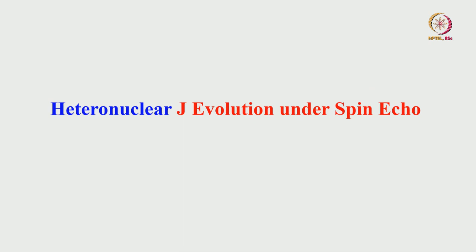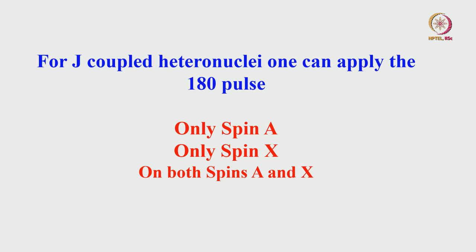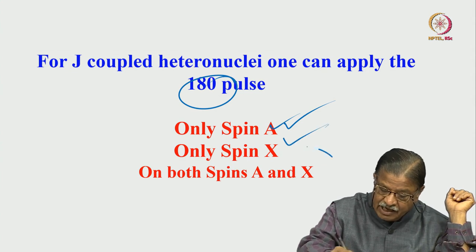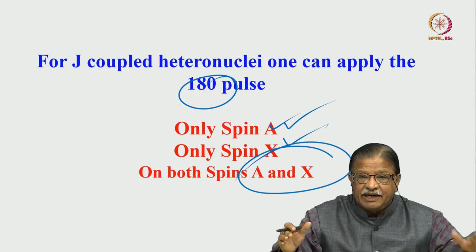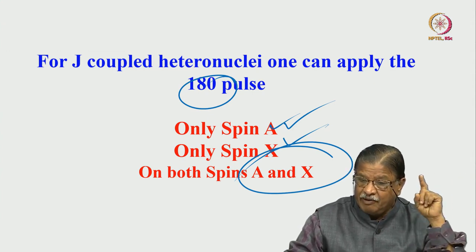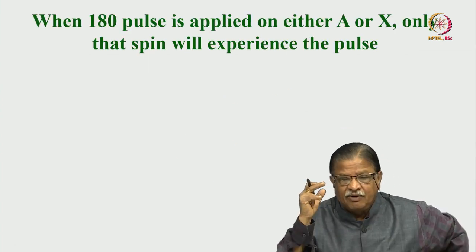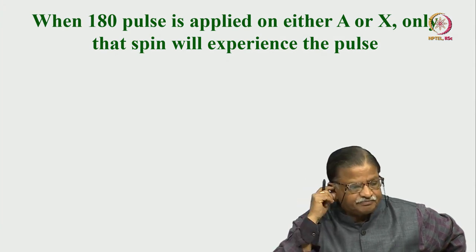What happens if we consider a heteronuclear spin, like proton and carbon? In the heteronuclear case, the spins resonate several megahertz apart, so we can separately apply RF pulses. We have three possibilities: apply 180° only on spin A, only on spin X, or simultaneously on both A and X. In the homonuclear case, applying 180° on A automatically also affects X, but here we can apply them separately.